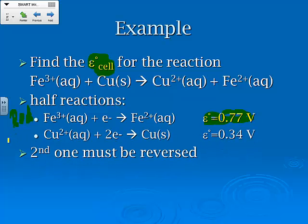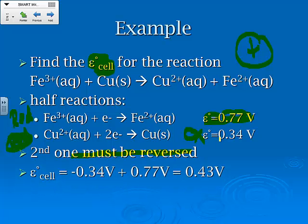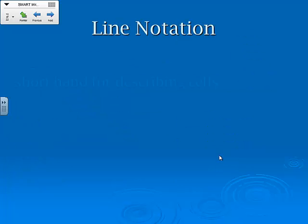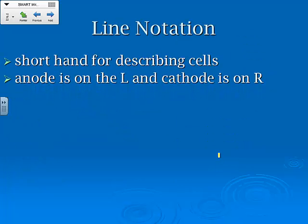Then we've got copper plus 2 electrons. This is also a reduction reaction. Now, we need it to be positive in order for it to work. So the second one is going to have to be reversed. So if we reverse the copper, we're going to change that to the oxidation reaction and switch it so that we get a net cell potential of 0.43 volts. It's got to be positive in order for it to be spontaneous or for it to work.